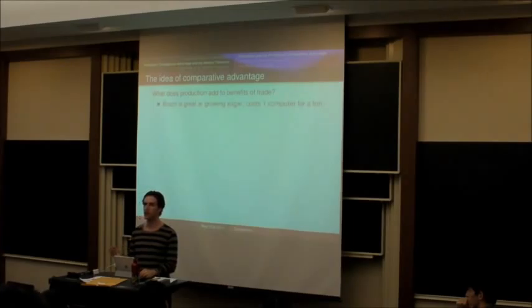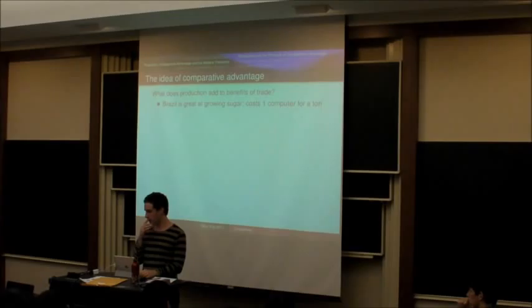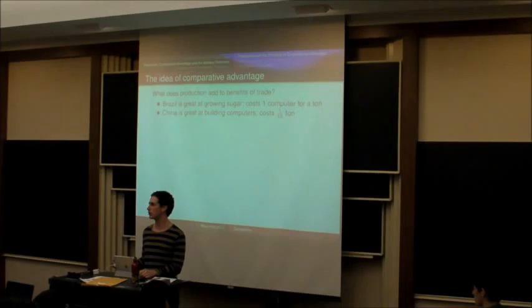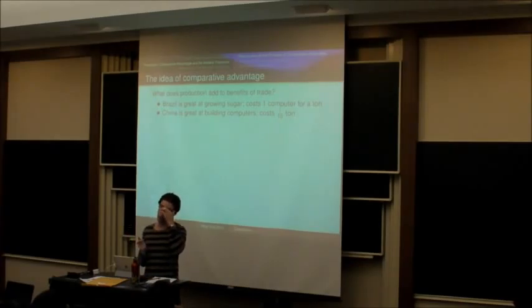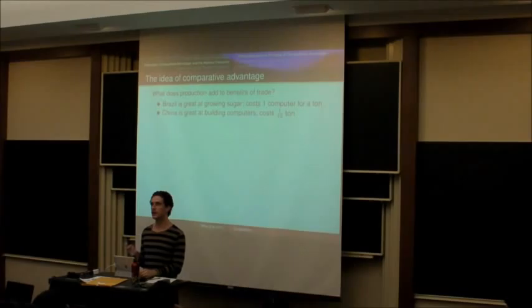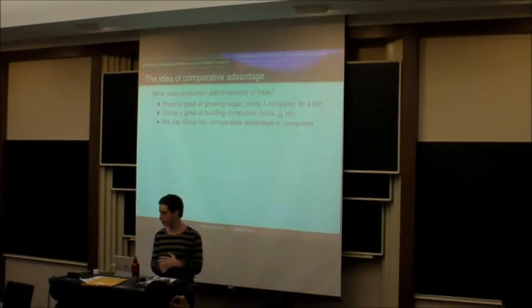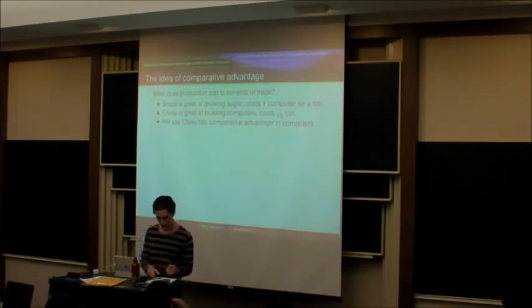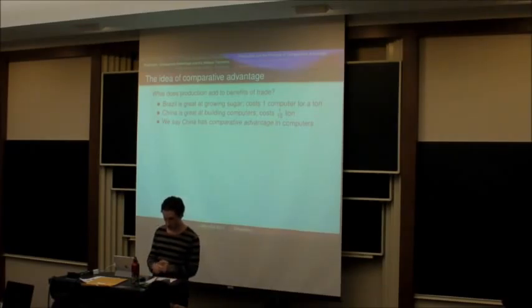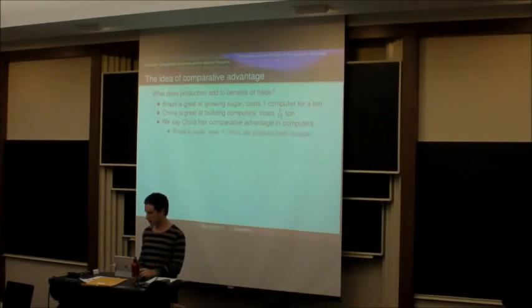So in order to grow one ton of sugar, they probably would have to use about the same amount of resources that it would take them to make one computer. Whereas China is much better at making computers than at growing sugar. There's like nowhere to grow sugar in China relative to Brazil. And so, to produce one computer, it would take about the same amount of resources that it would take to produce one tenth of a ton of sugar.